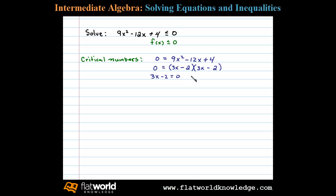Setting each factor equal to 0, we can see we're going to obtain a double root in this case. 3x equals 2, or x equals 2/3 occurs twice. So really there's only one critical number, there's only one root here, and that's when x is equal to 2/3.